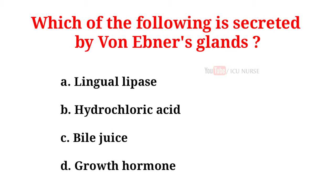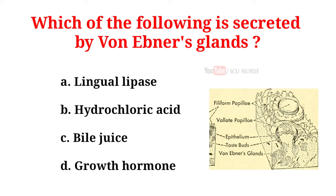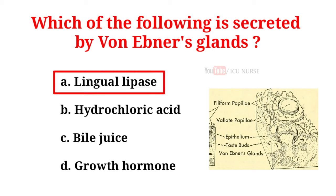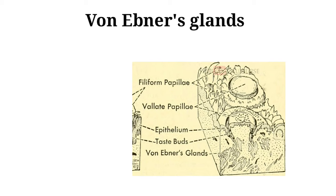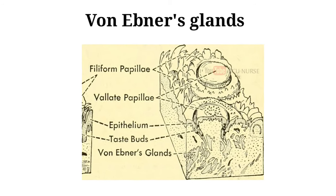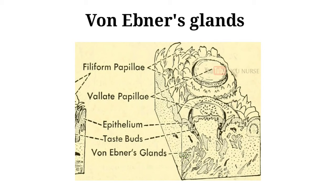Which of the following is secreted by von Ebner's glands? A. Lingual lipase. B. Hydrochloric acid. C. Bile juice. D. Growth hormone. And the correct answer is A. Lingual lipase. Von Ebner's glands are glands found in a trough circling the circumvallate papillae on the dorsal surface of the tongue near the terminal sulcus. They secrete a purely serous fluid that begins lipid hydrolysis and facilitate the perception of taste through secretion of digestive enzymes and proteins.